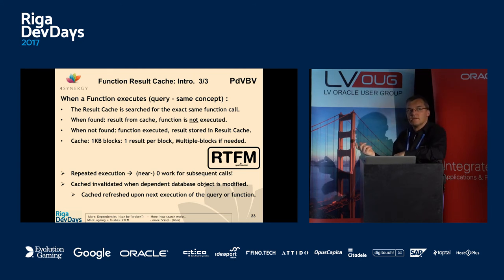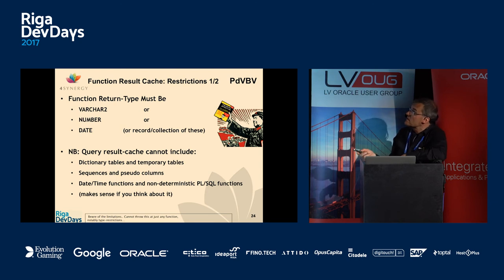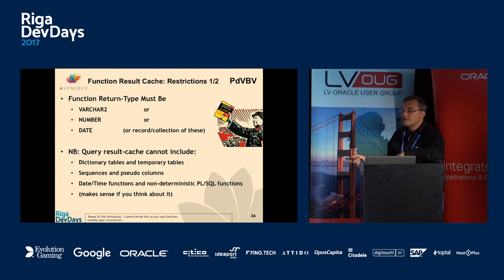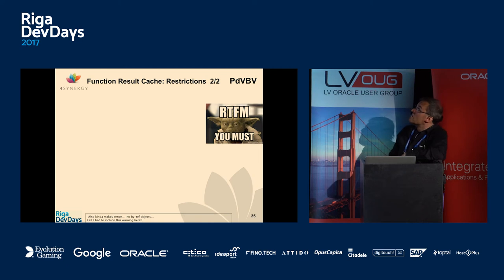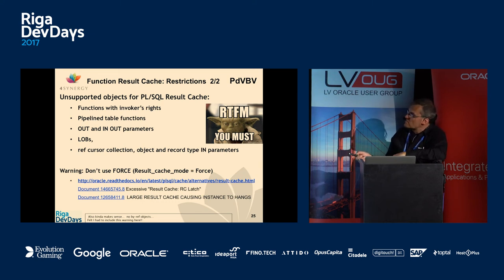It's a nice fix — maybe for a problem you don't want to have, but developers will develop however they develop. There are some restrictions: the return type must be a VARCHAR, NUMBER, or DATE — you cannot cache BLOBs or complex variable types. The query result cache cannot include dictionary objects, sequences, or date/time functions. Invoker rights are not supported, pipelined functions are not supported, IN/OUT parameters don't work, LOBs don't work, and REF cursors don't work.